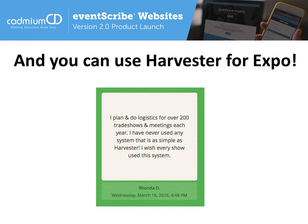Here's feedback we received from an exhibitor contributing information that would eventually flow into the Eventscribe website: 'I plan and do logistics for over 200 trade shows and meetings each year. I've never used any system that's as simple as Harvester. I wish every show used this system.' When exhibitors submit their description, company information, or logo, those things automatically flow into the itinerary planner. For logos and speaker photos, we hand edit every single speaker photo and every single logo so that photos look consistently the same size and zoom level, and logos are optimized for quality and consistent sizing.